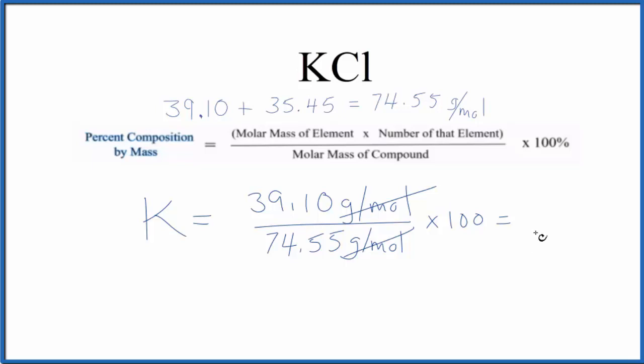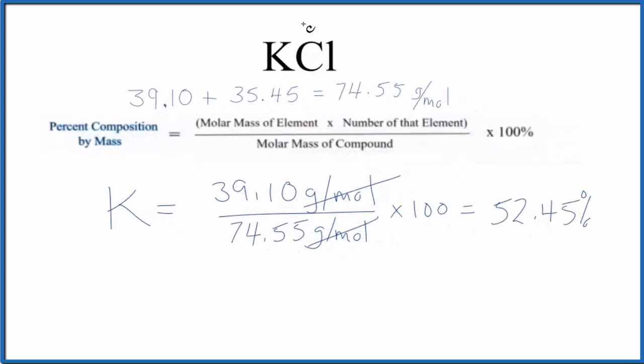We end up with 52.45%. This means if we had a sample of KCl, the mass of the entire thing, 52.45% of that mass would be the potassium atoms.